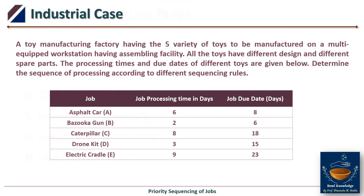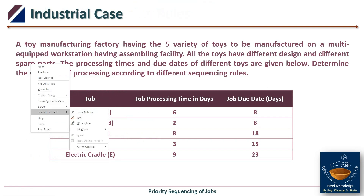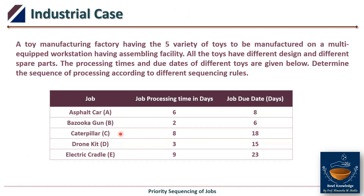A toy manufacturing factory has five varieties of toys to be manufactured on a multi-equipped workstation with assembling facility. All toys have different designs and different spare parts. The processing times and due dates of the different toys are given. We need to determine the sequence of processing according to different sequencing rules. There are five types of toys — A, B, C, D, and E — each with different processing times and due dates.